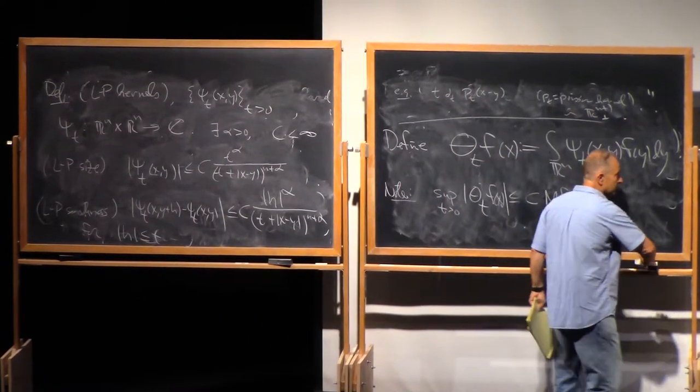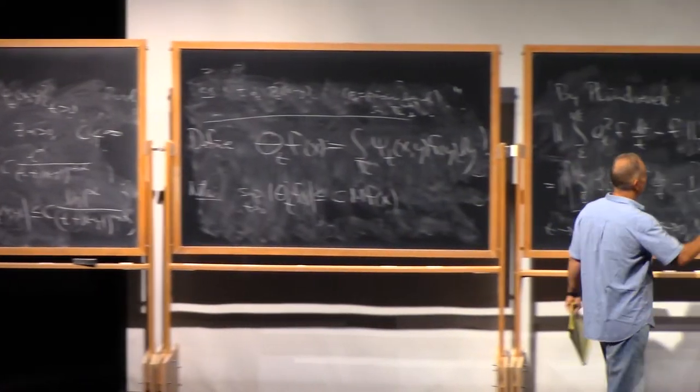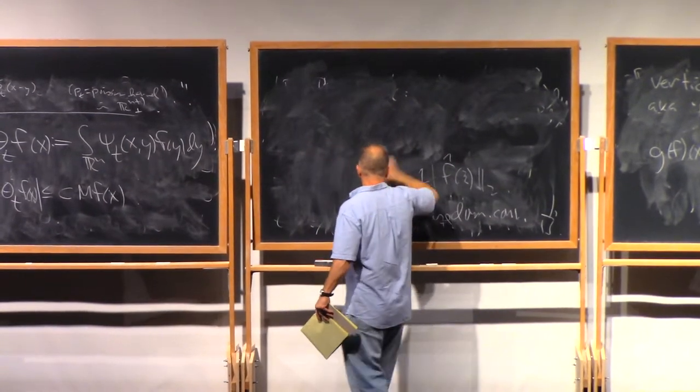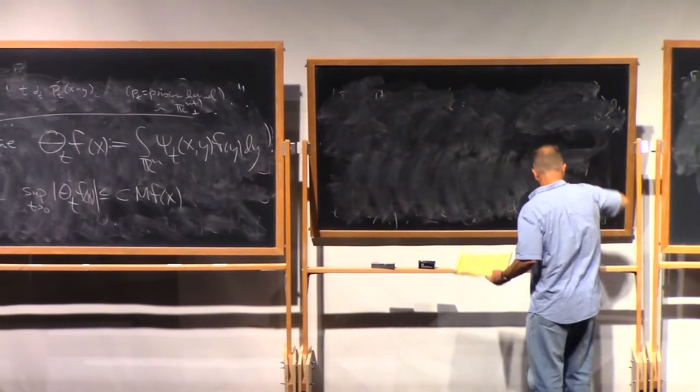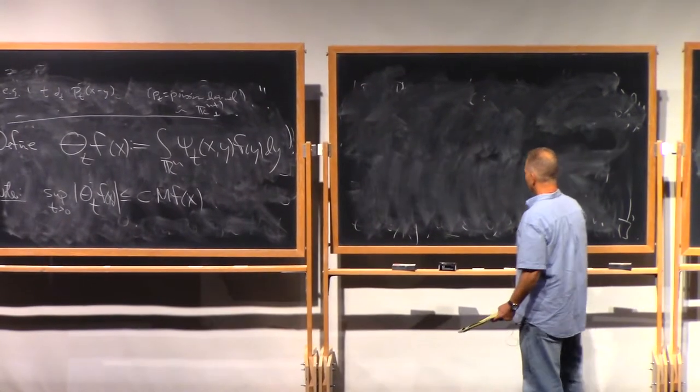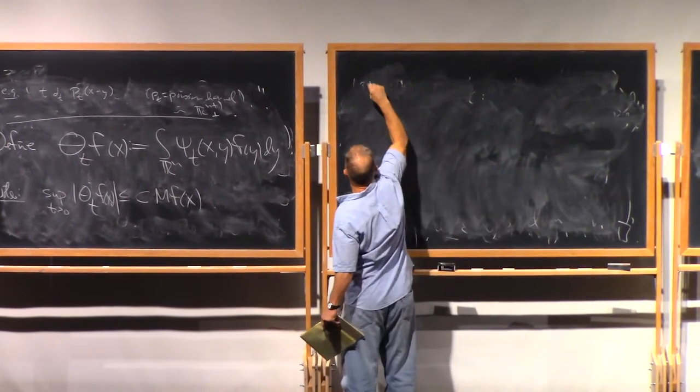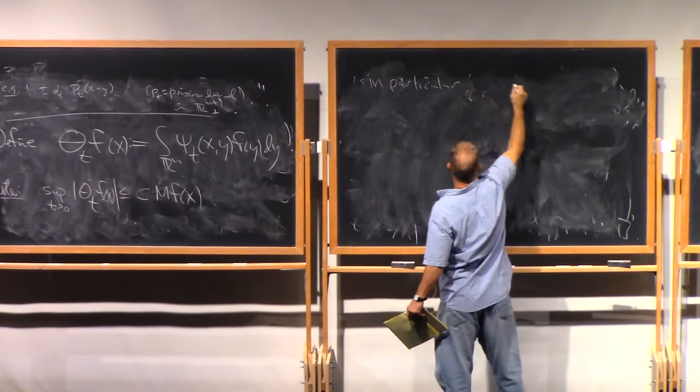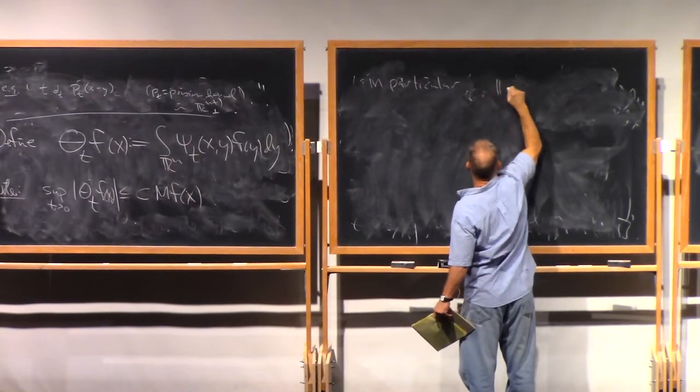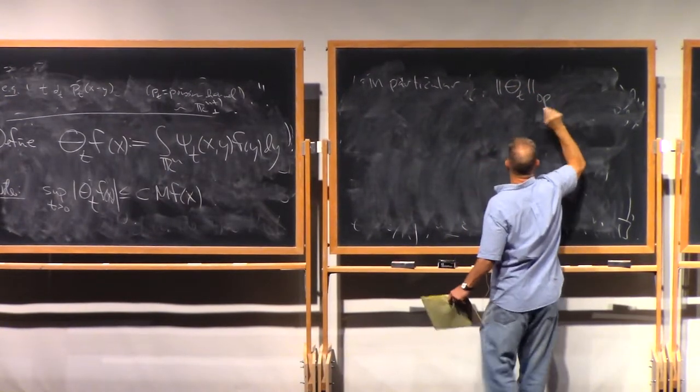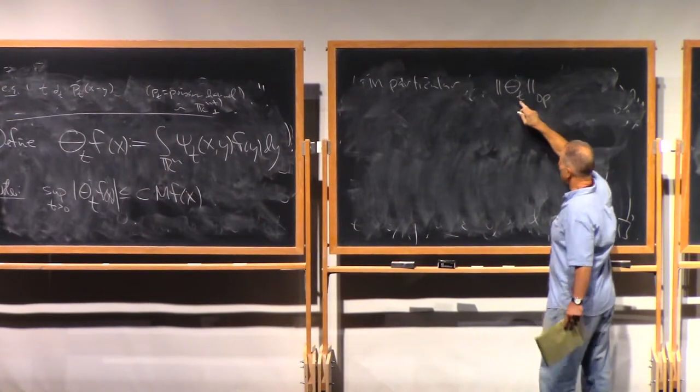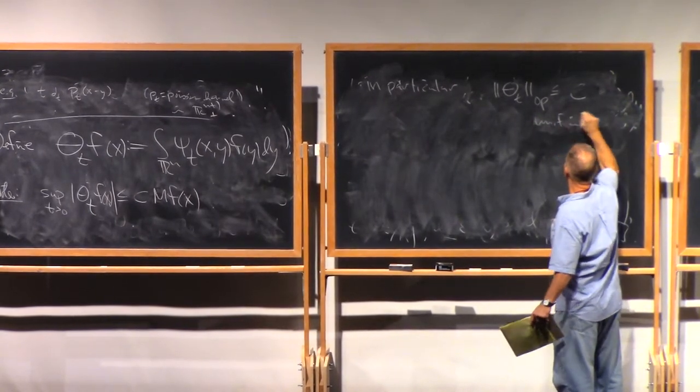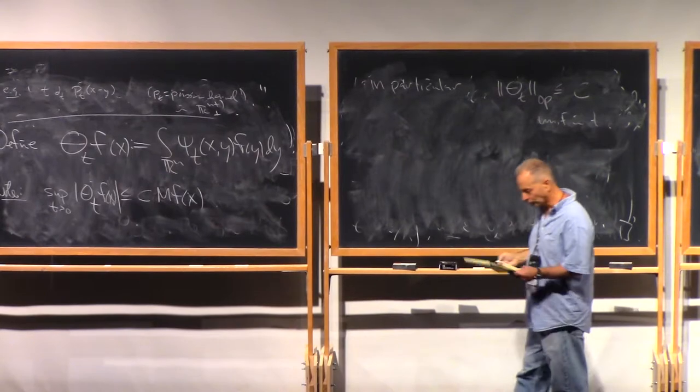So in particular, we have uniform L2 bounds, uniform in t for the theta_t's. The operator norm, and for me, operator norm means L2 to L2 operator norm. The operator norm of theta_t is bound by some uniform constants uniformly in t.